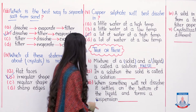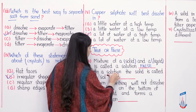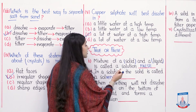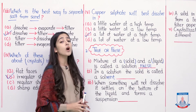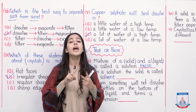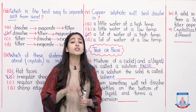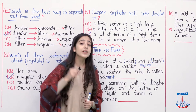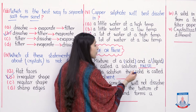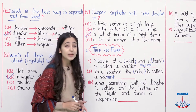Moving to the next statement: in a solution, the solid is called solvent. There are two components of a solution: number one is the solid part and number two is the liquid part. The liquid in which we dissolve particles is called solvent, and the solid particles we dissolve are called solute. The solid portion of a solution is called solute, not solvent. So statement number 2 is false.